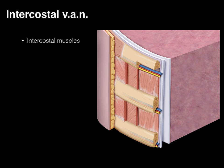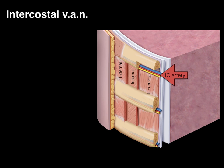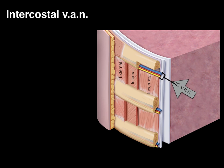In between that space we have intercostal muscles: an external intercostal muscle, an internal intercostal muscle, and an innermost intercostal muscle. Between the internal and innermost intercostal muscles, we have an intercostal vein, an intercostal artery, and an intercostal nerve in that order — V-A-N: vein, artery, nerve, or VAN. There we have the intercostal VAN.